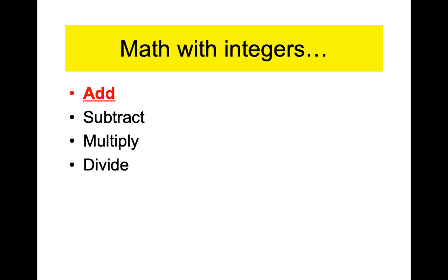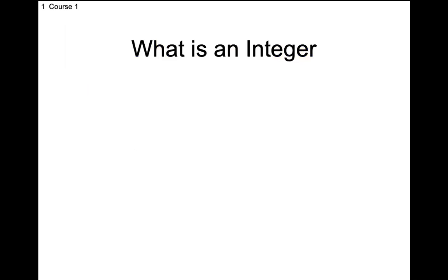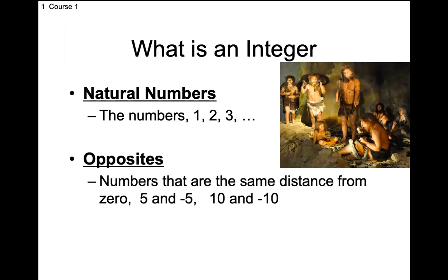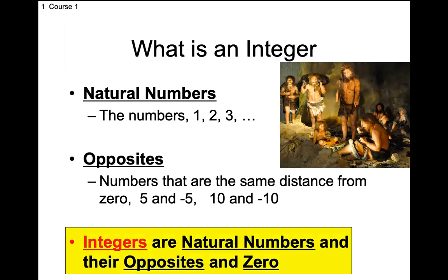The entire chapter is just add, subtract, multiply, and divide. Today, tomorrow, and Thursday we will do addition, then we'll move on to subtraction. So just so we're on the same sheet of music: integers are made up of the natural numbers — the counting numbers one, two, three — their opposites, and zero. On Friday we learned opposites were numbers that are the same distance away from zero: negative one, negative two, negative three. Those are what make up the integers.